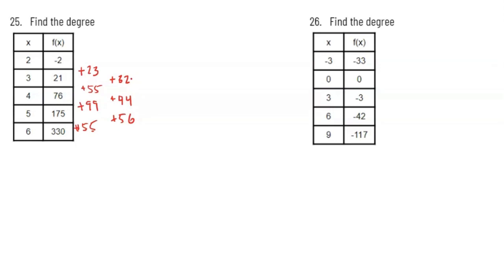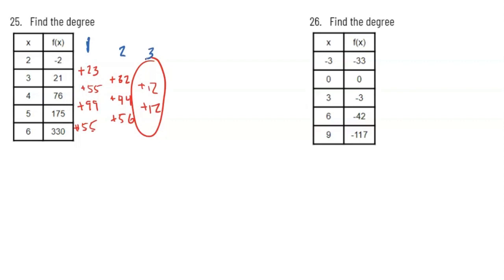From 32 to 44, that's a change of 12. And from 44 to 56, that's also a change of 12. We stop here because our change is now constant. We had to look at the differences one, two, and then it wasn't until that third set of successive differences that we saw a constant change. That means this is a third degree polynomial.